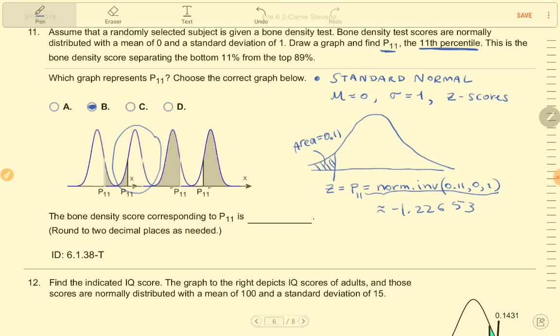And if I round that to two decimal places, that would be a Z-score of negative 1.23.